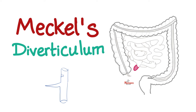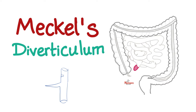Now let me give you a classic example of choristomas: Meckel's diverticulum. Imagine part of your gut — your intestine. An inward growth is called a polyp, but an outward growth, an outpouching, is called a diverticulum, such as Meckel's diverticulum. Did you know that Meckel's is the most common congenital anomaly of the gastrointestinal tract? Moreover, it is the most common cause of anemia in neonates and children in countries where severe malnourishment is not common.